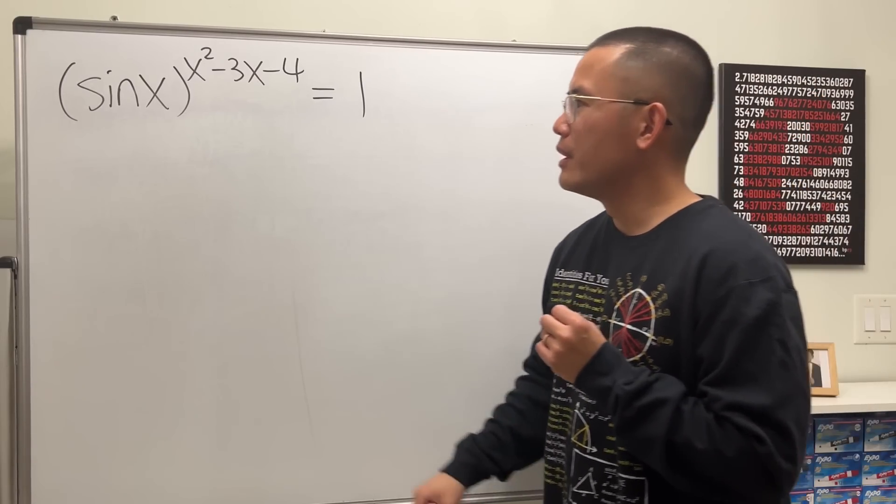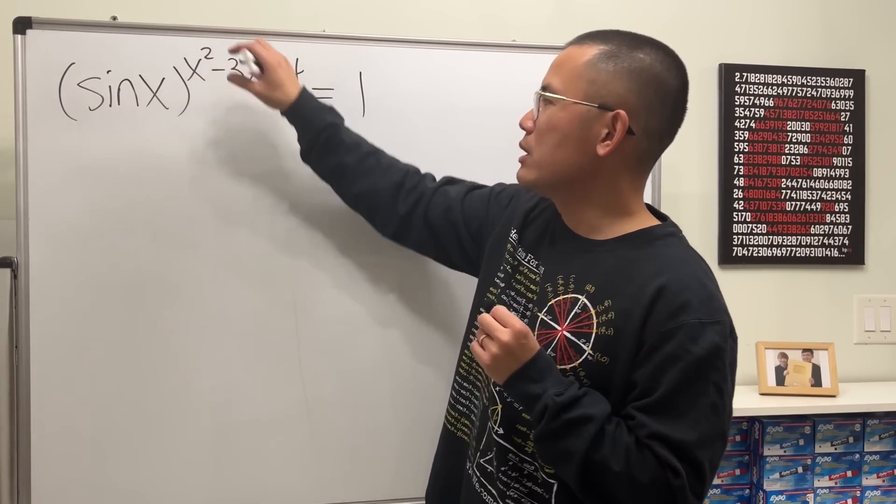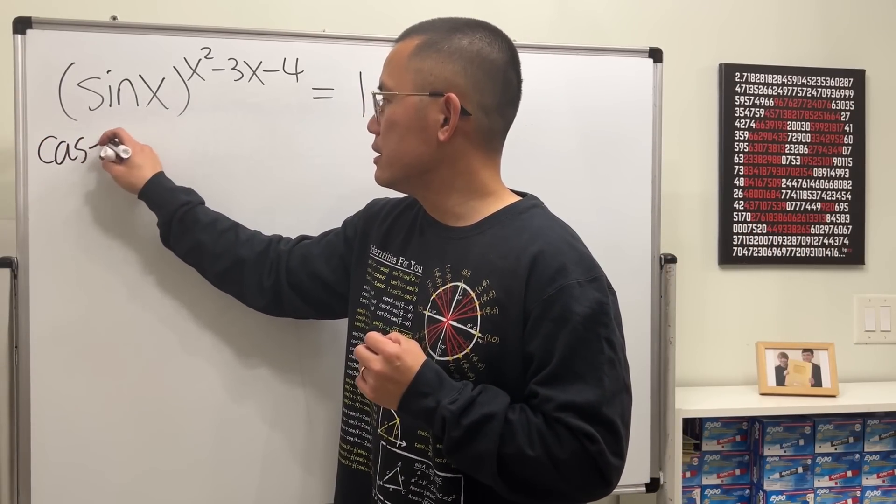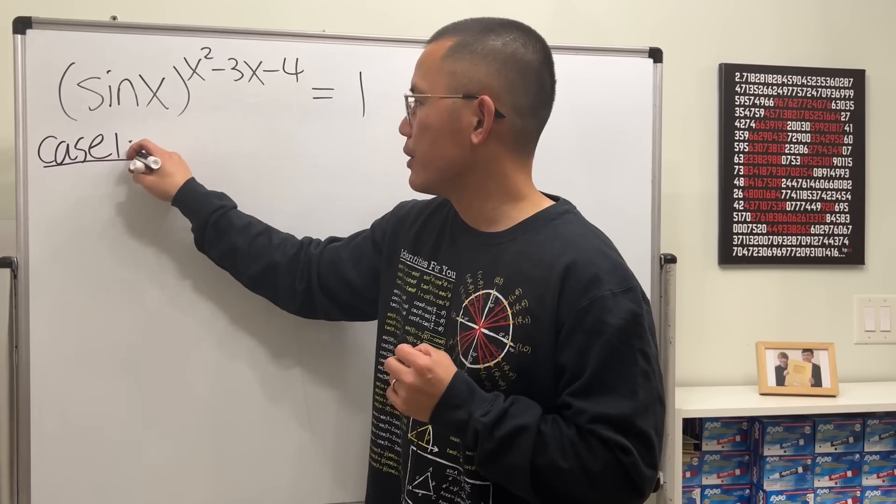How do we approach this kind of equation? Well, here's the deal. When we have something to a power equal to 1, break down into cases. And here, this is case 1.